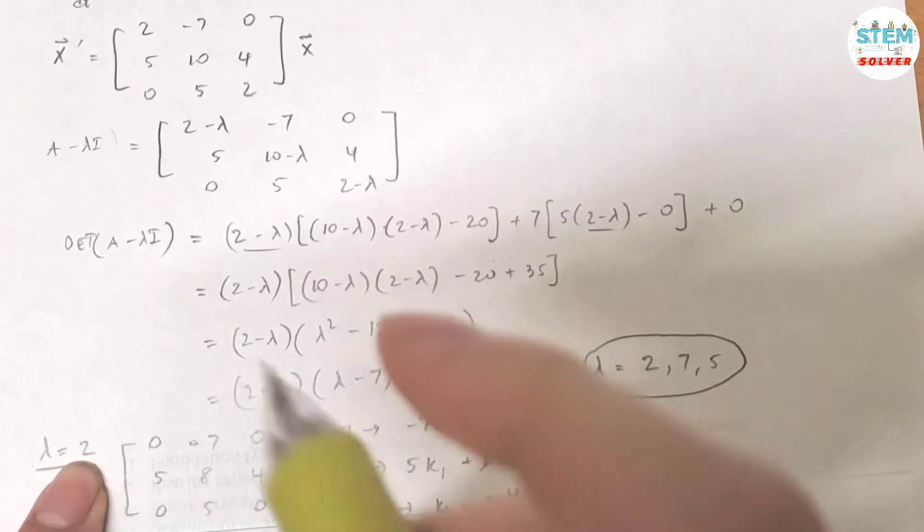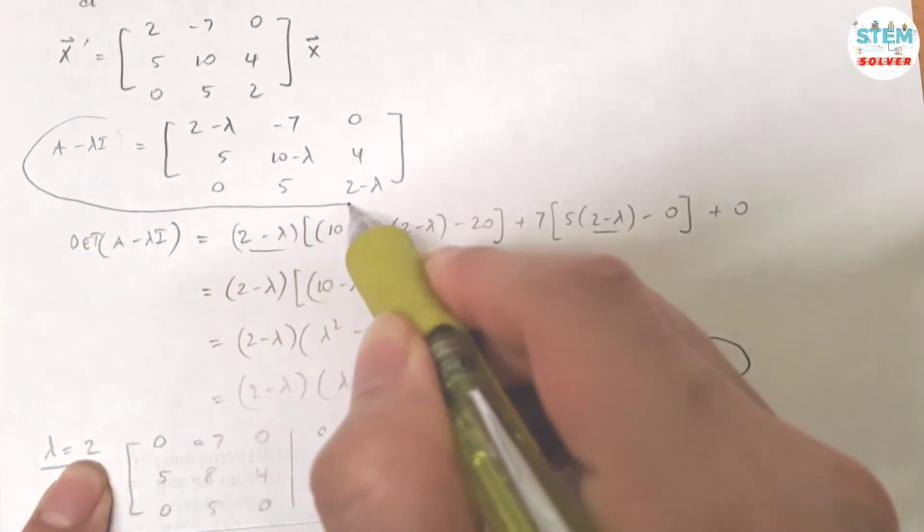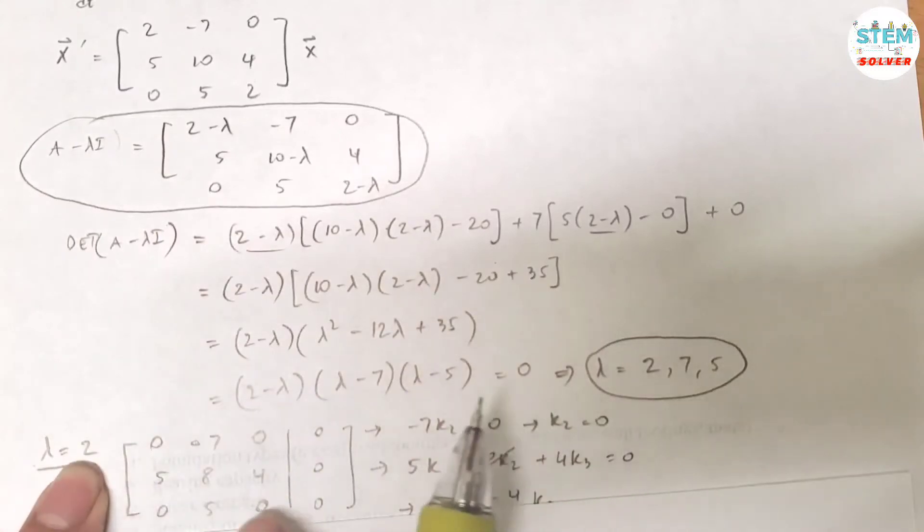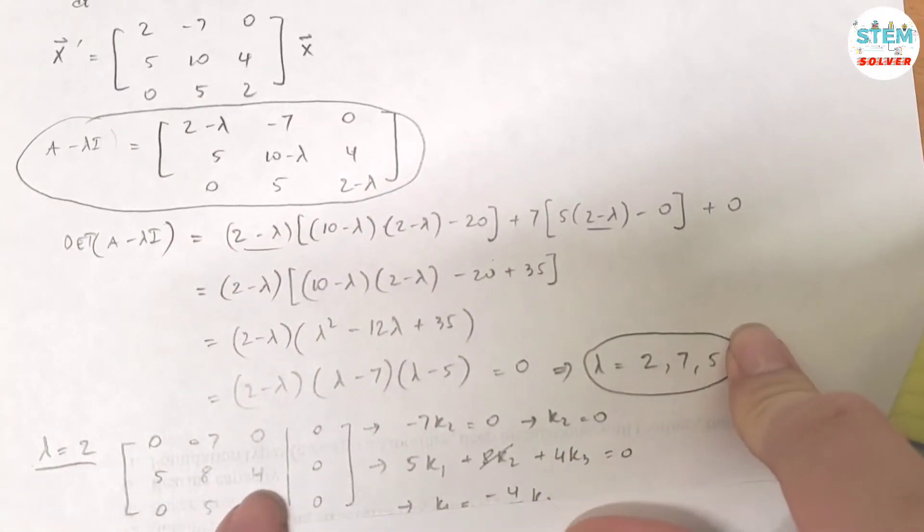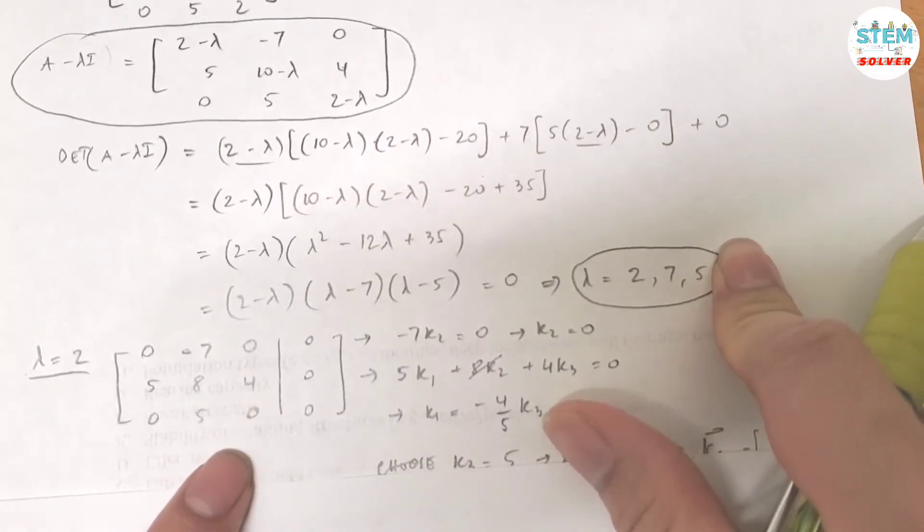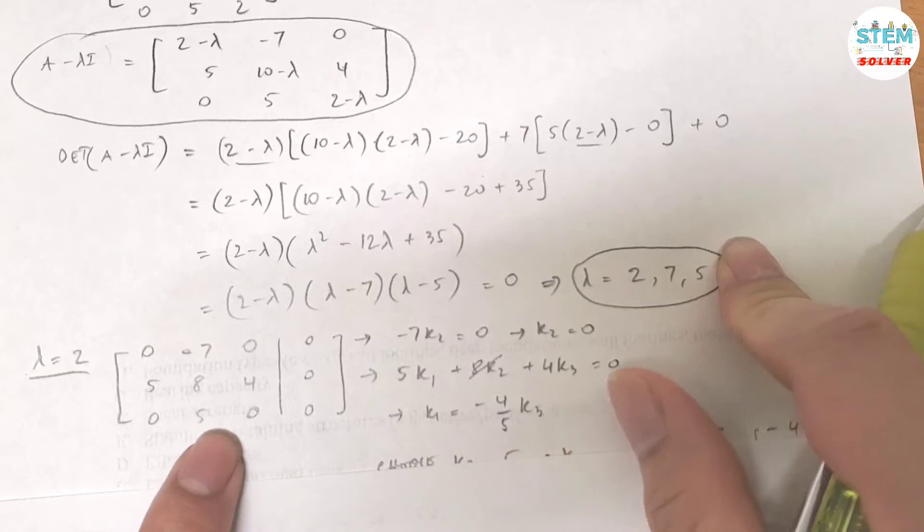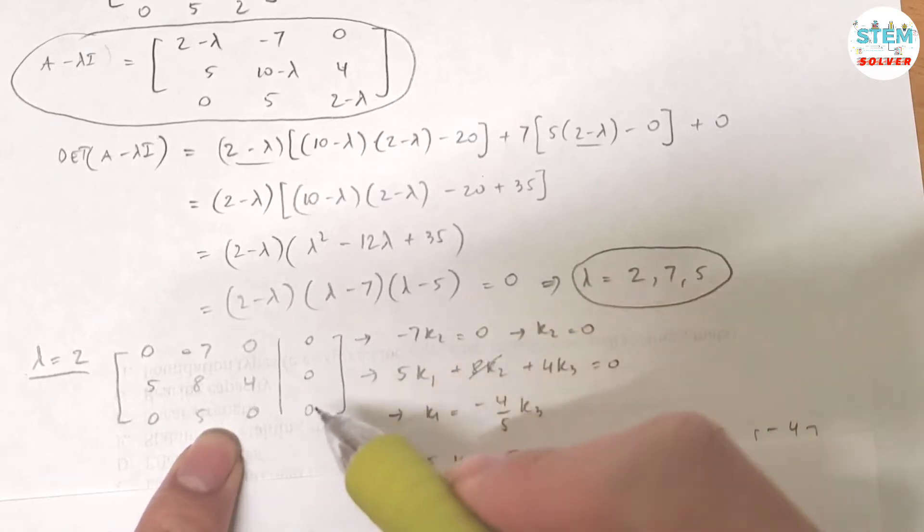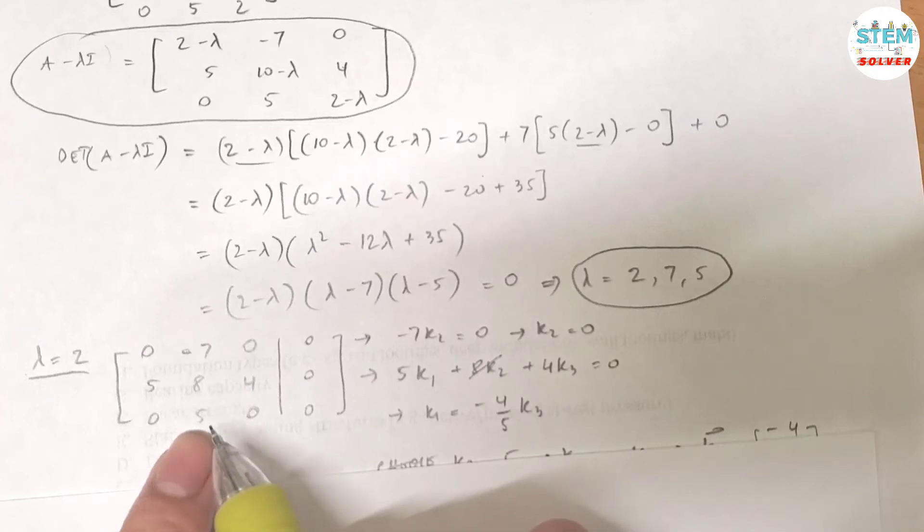For lambda equals to 2, plug it into here. That gives you this matrix, augmented with 0. Normally you would reduce this down to a base matrix, but because I know that I will get infinite solution, so instead of going over all of those matrices I'm gonna go back to solving a system of linear equations using variables.